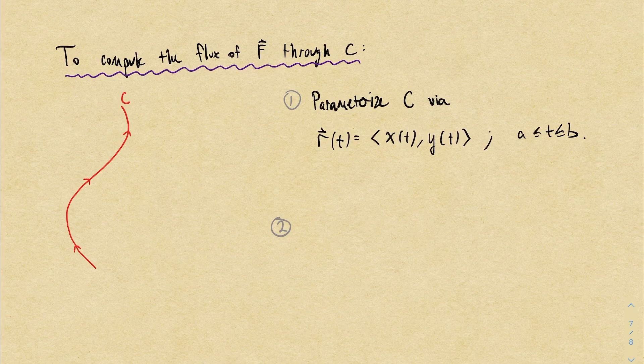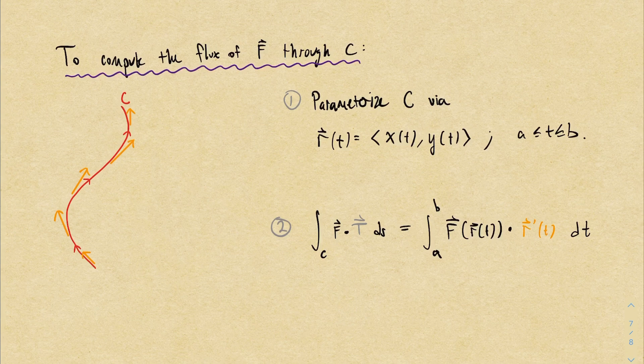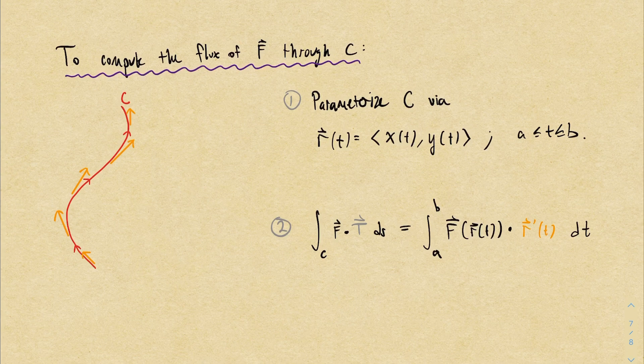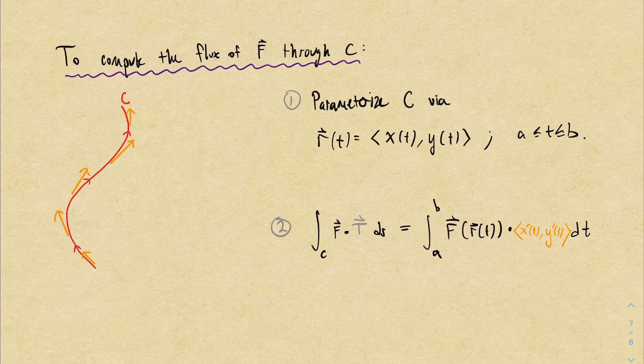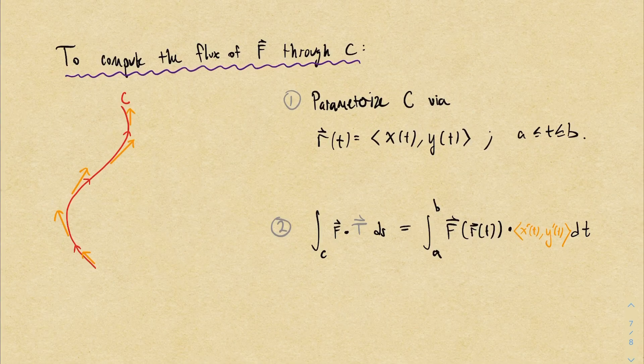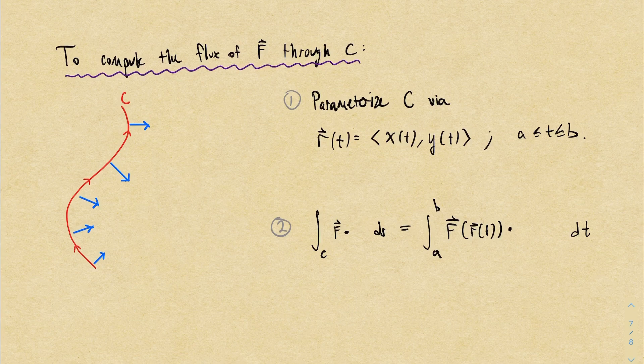And then what? Well, think about how we compute a regular vector line integral. The integrand is the dot product of the vector field with the unit tangent vector. Which, using a parameterization, we can alternatively compute as the vector field of the parameterization dot r prime. But this isn't what we want. We want to compute the flux. So I'll take each of these r prime vectors and rotate them 90 degrees to the right.